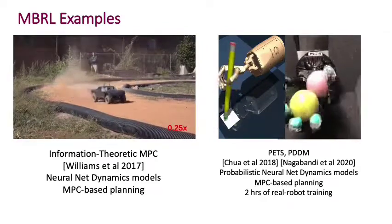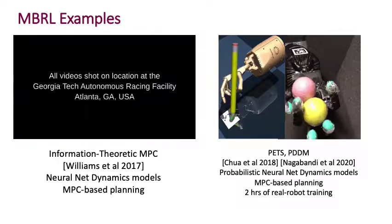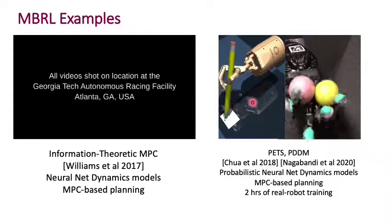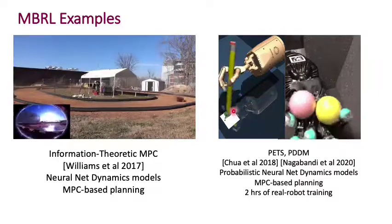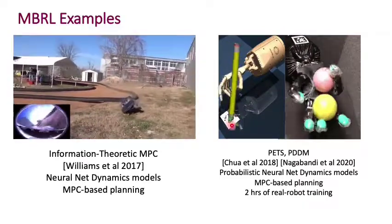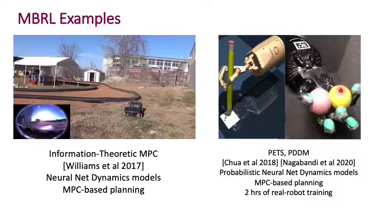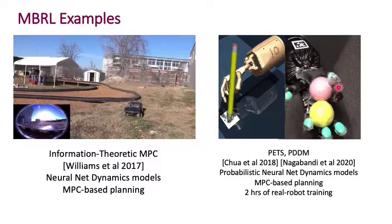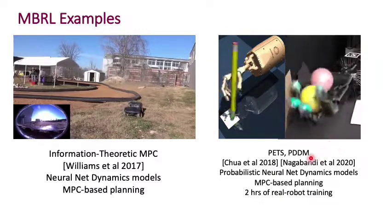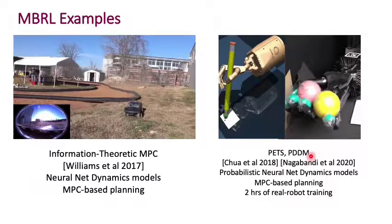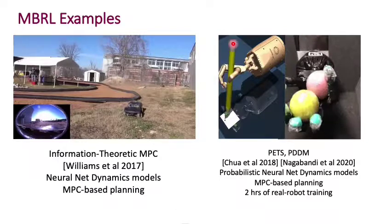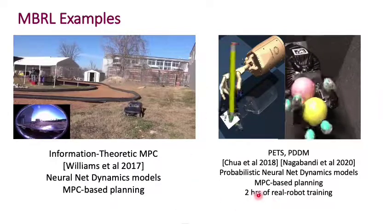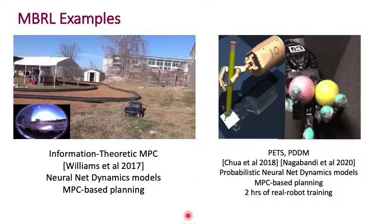On the right, you see some examples of manipulation tasks being learned with model-based reinforcement learning. In this case, a simulated task of writing with a pencil, and in this case, juggling these two balls in a robotic hand. Again, these are quite difficult tasks. Manipulation with such contact-rich events tends to be really difficult. And so this is quite impressive that it's actually able to learn it within two hours of real robot training.